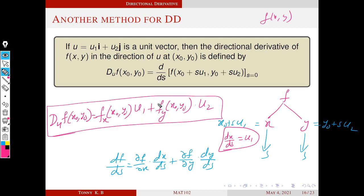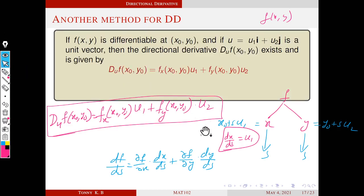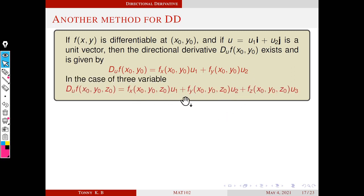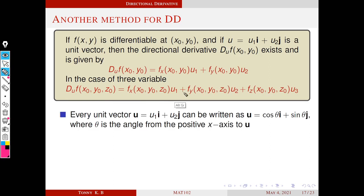This is comparatively easy because you simply compute the partial derivatives and plug in all the values. The formal theorem states: if f(x,y) is differentiable at a point and u is a unit vector, then the directional derivative is D_u f(x0,y0) = fx(x0,y0)·u1 + fy(x0,y0)·u2. Similarly for three-variable functions, an analogous formula holds.